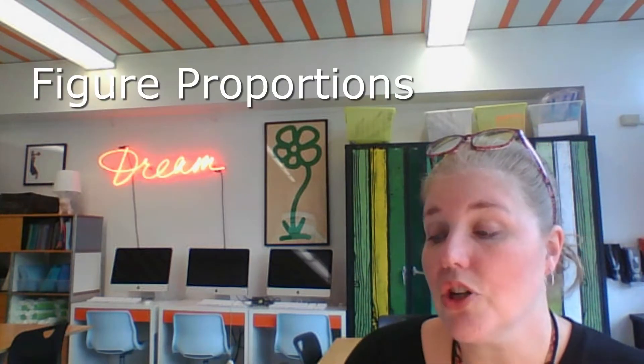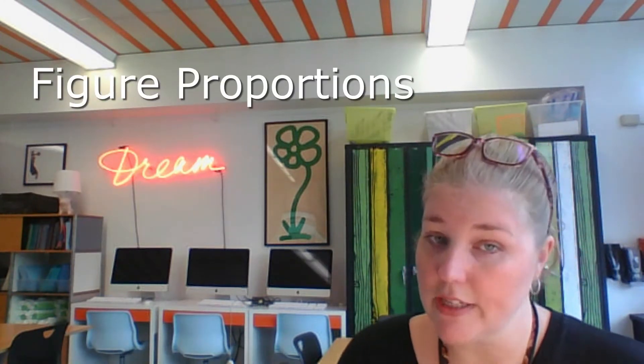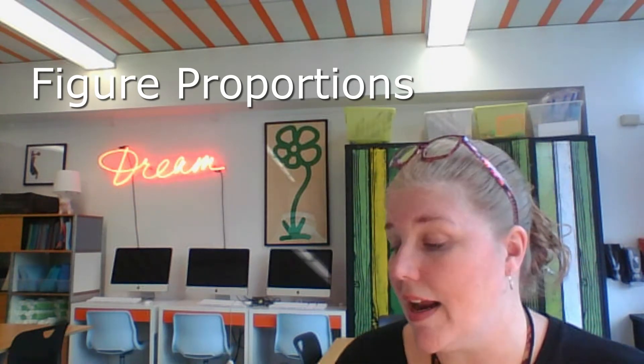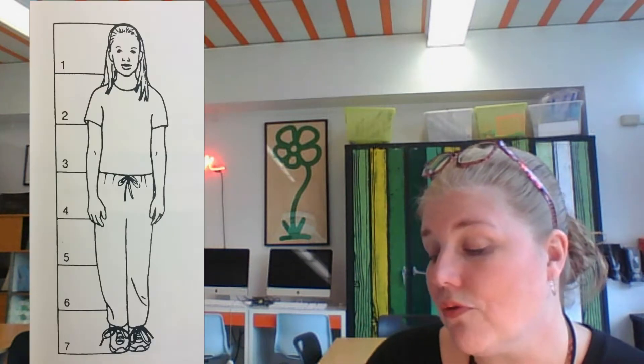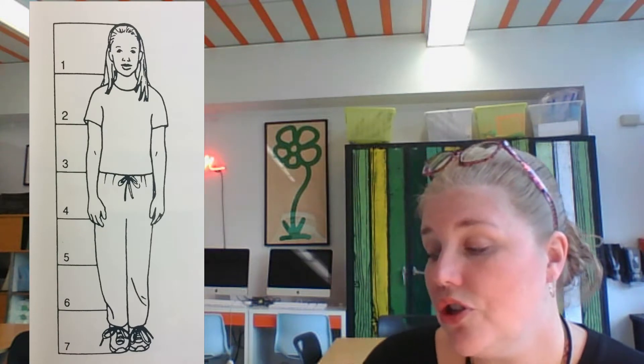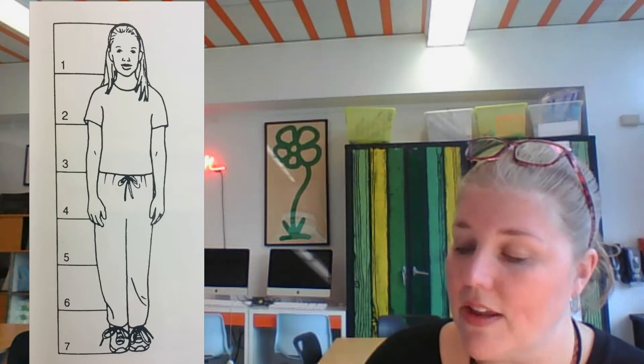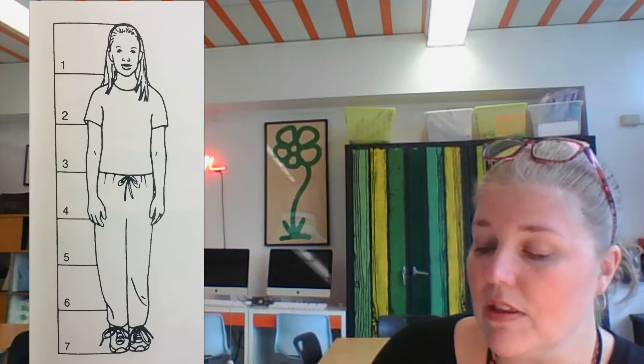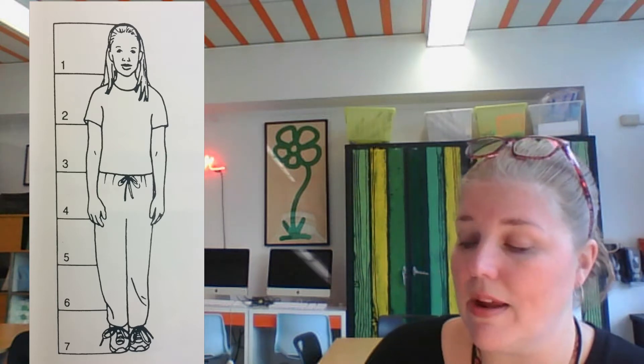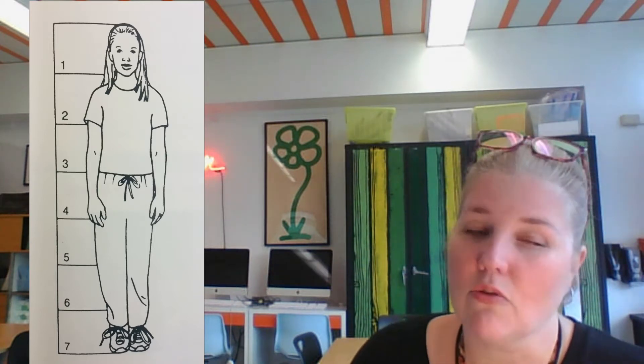We talked last time, or the time before, about the proportions in a human face, and we used a chart that looked a little bit like this. Today we're going to talk about figure proportions — the proportions of an entire person's body. We're going to look at this chart, which shows that your average person about your age is about seven heads tall. We can use these proportions to make sure that we get our body the right size or in the right proportion.